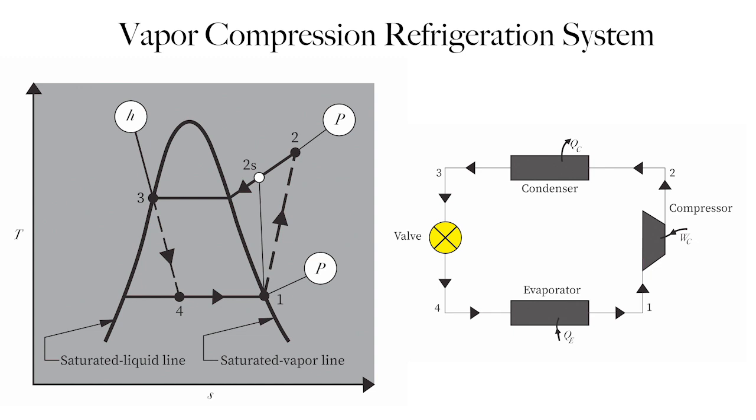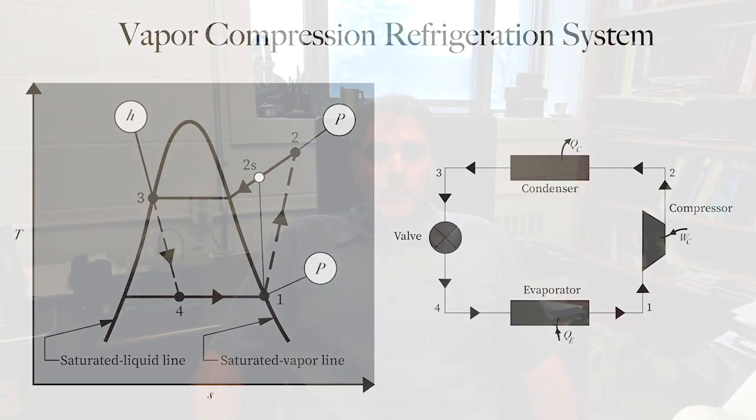The fluid is then passed through an expansion valve or a capillary tube in order to drop the pressure significantly, at which point it passes through the evaporator, gathering heat from the inside of the refrigerator and returning to state one to complete the cycle. Thermodynamics enables you to calculate the maximum energy you have to put into that system to affect the desired heat transfer rate. Fluid mechanics enables you to design the piping systems and understand the pressure drops experienced, which result in differences from the ideal thermodynamic cycle — changing where we are on the state diagrams.